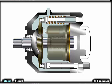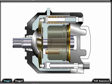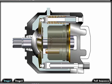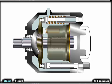Axial piston pumps convert rotary motion of an input shaft to an axial reciprocating motion of the pistons. This is accomplished by a swash plate that is either fixed or variable in its degree of angle.